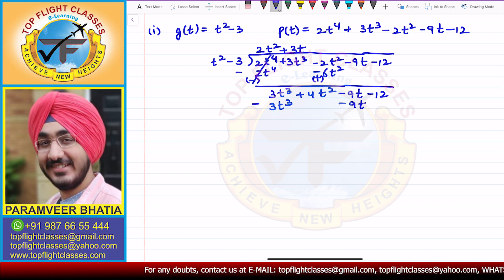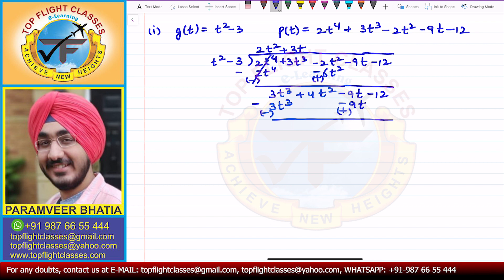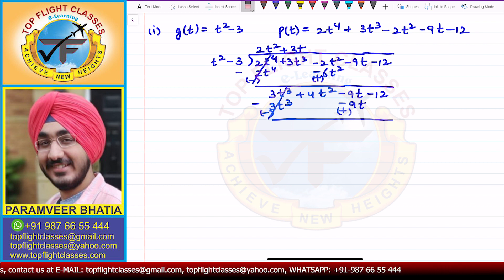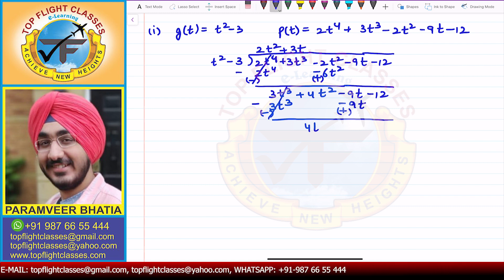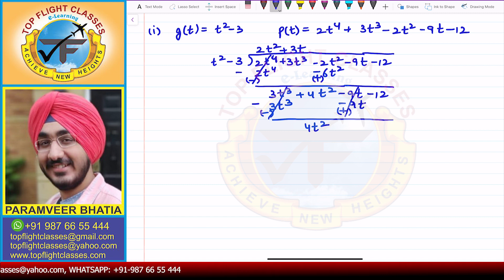When I subtract, the signs change. So 3t³ − 3t³ cancels, 4t² comes down as is, −9t + 9t also cancels, and −12 remains as is.